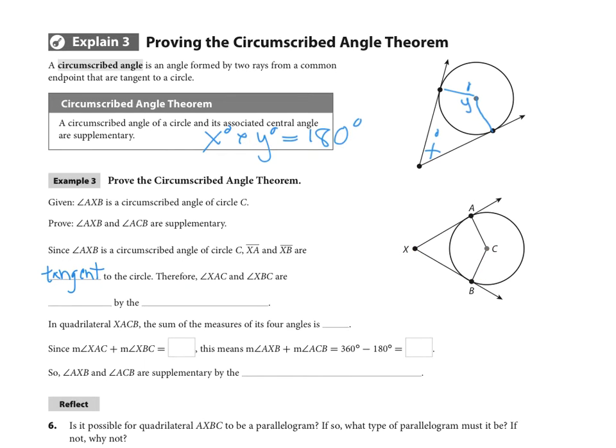Therefore, the angles XAC and XBC—so that's these angles here—are going to be right angles because we know that tangents and radius drawn to them are going to be perpendicular, and that's what we just learned in the previous theorem by the tangent radius theorem.